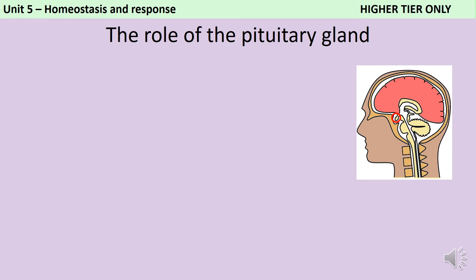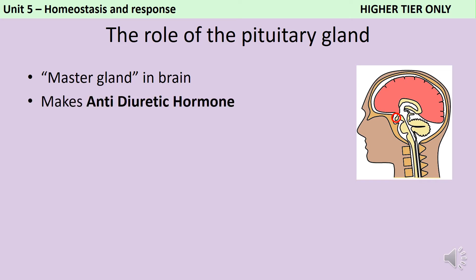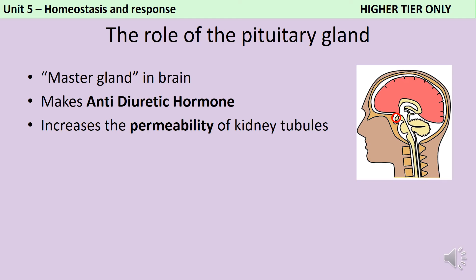If you're taking the higher tier of GCSE biology you also need to talk about the role of the pituitary gland and antidiuretic hormone in controlling water levels within the body. The pituitary gland sits in the brain just behind the bridge of the nose and is sometimes called the master gland because it produces hormones that have downstream effects on other glands. One of the hormones released by the pituitary gland is antidiuretic hormone, or ADH. A diuretic is a substance that makes you urinate more, so antidiuretic hormone stops you from urinating. ADH is produced by the hypothalamus and released from the pituitary gland when the blood becomes too concentrated because there isn't enough water in it.